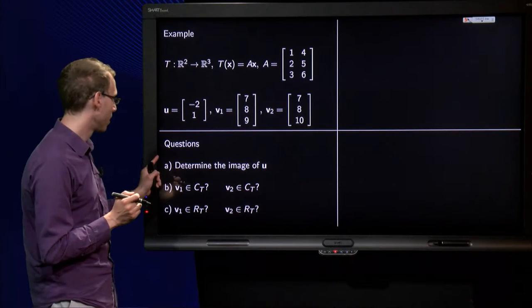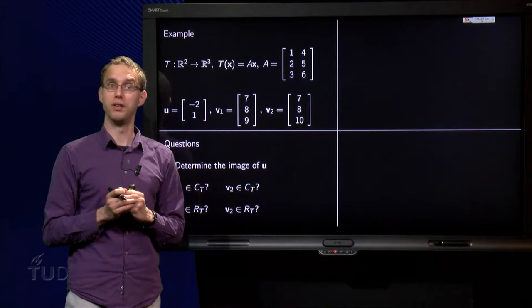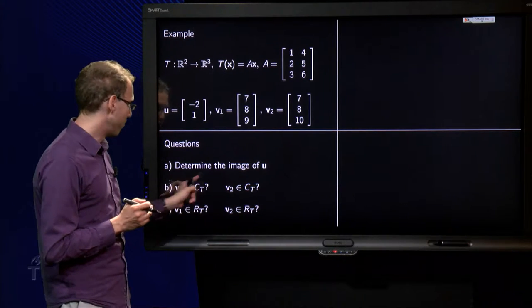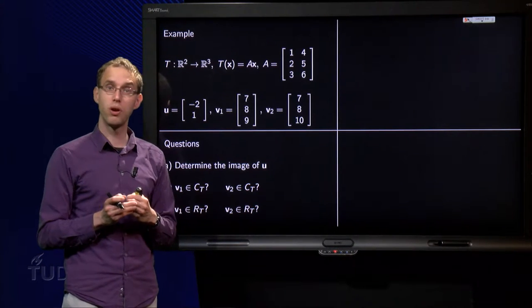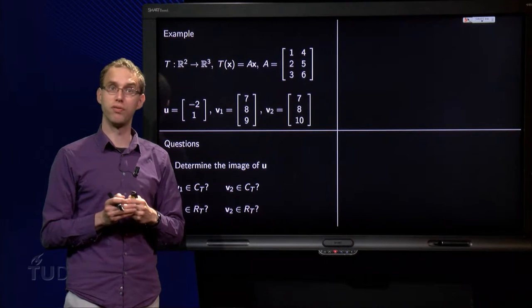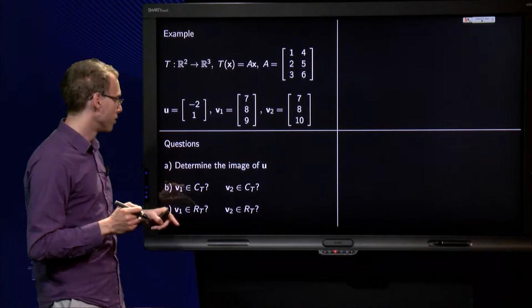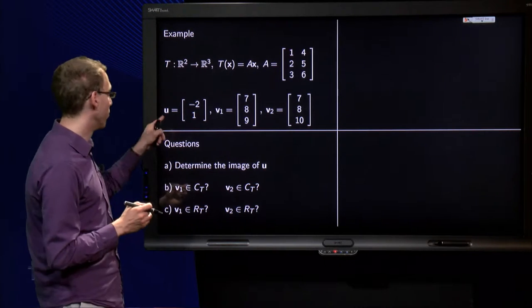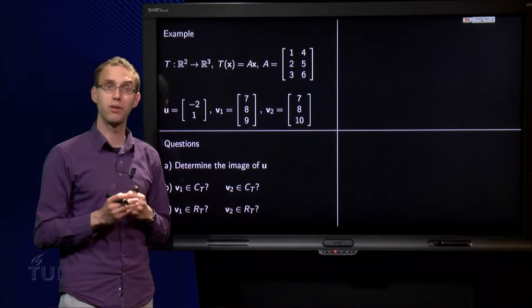And then we will answer the following questions. Question A: Determine the image of u. Question B: Is v1 in the codomain and v2 in the codomain of T? And same question for v1 and v2, but then in the range.